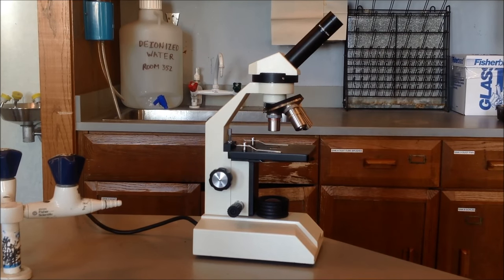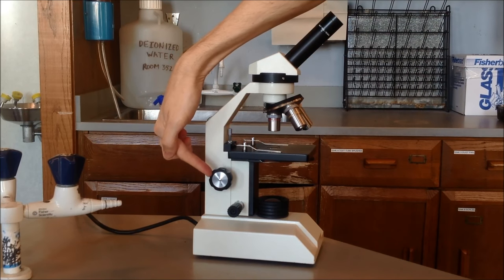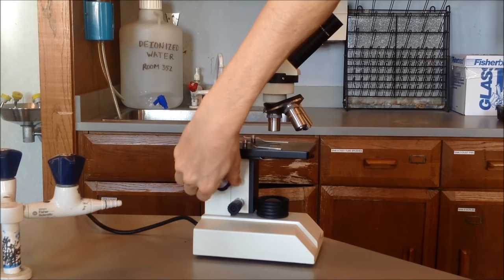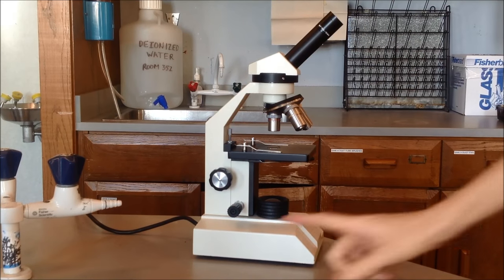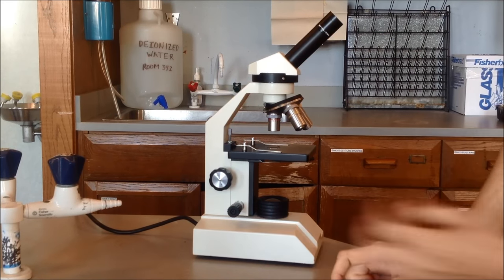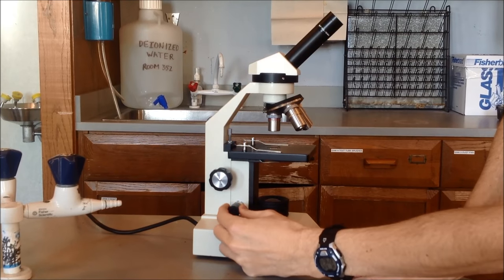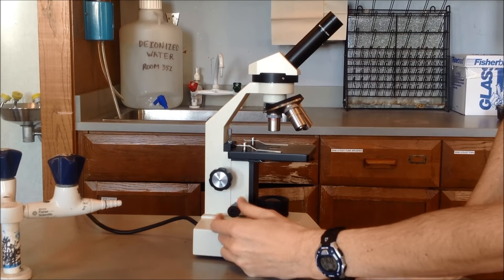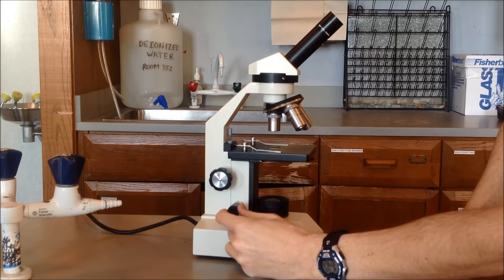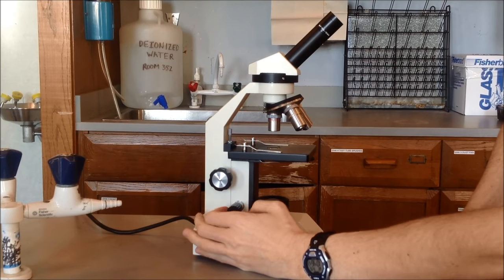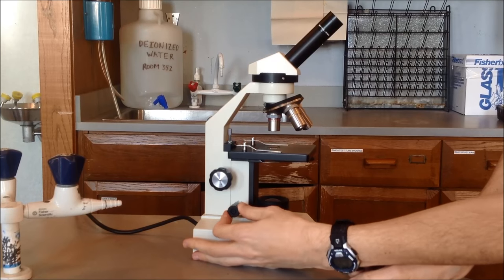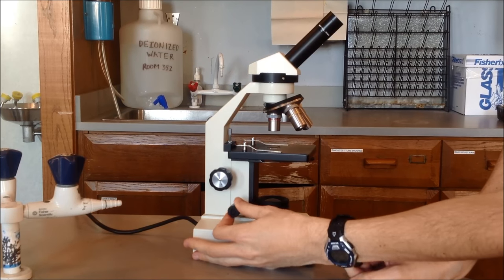And then you have the coarse adjustment. It's going to be the large knob here, which you can see moves the stage like so. And then the fine adjustment is going to be this one right here. And the fine adjustment does the same thing as the coarse adjustment, except it doesn't move the stage as much. So the coarse adjustment moves the stage a lot in very small amounts of turning. And the fine adjustment moves the stage in very small amounts.